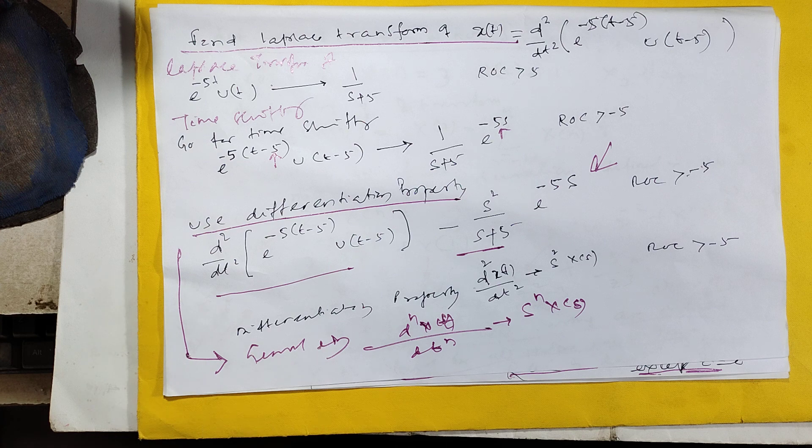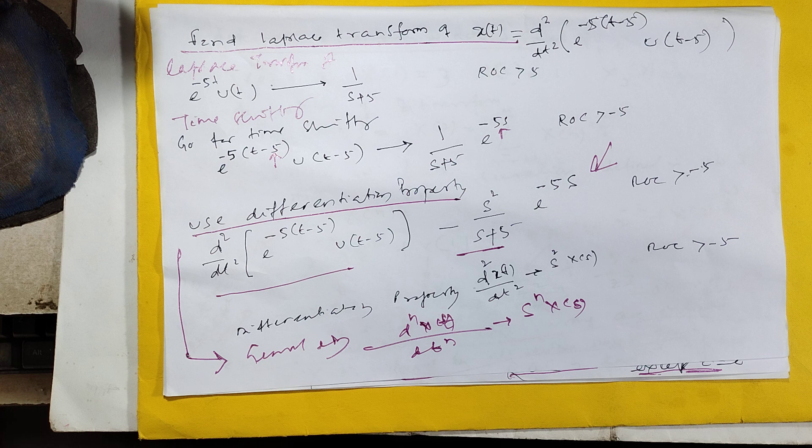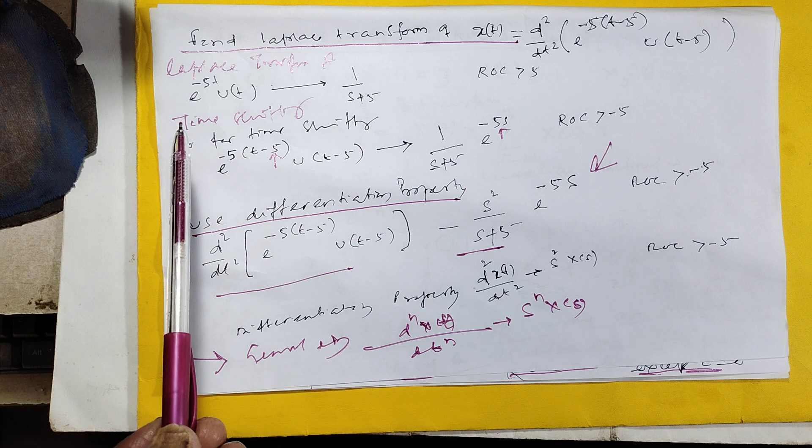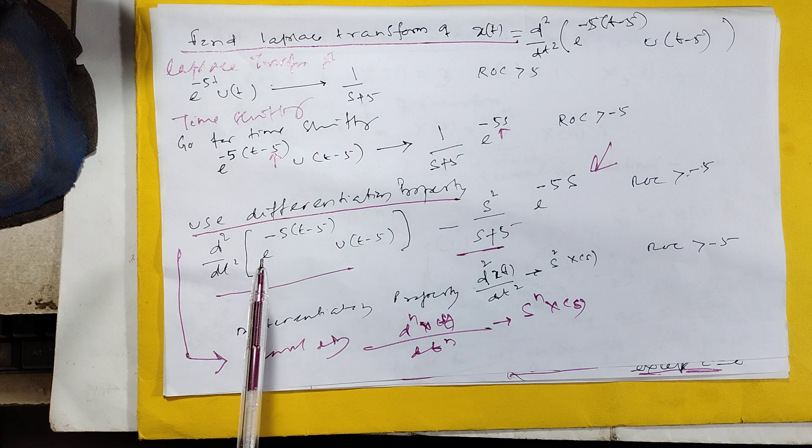u(t) is equal to 1/s. What is e^(-5t)·u(t)? That is 1/(s+5).